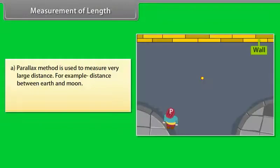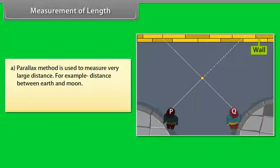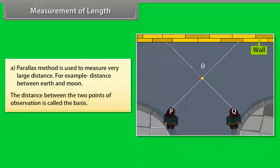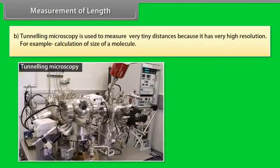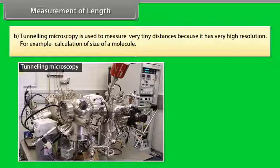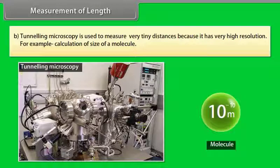Let us understand with an example. A girl is observing the rod against a wall from two different points P and Q. She notices that the position of the rod seems to change with respect to the wall. This is known as parallax. The distance between P and Q is called basis. Tunneling microscopy is used to measure very tiny distances because it has very high resolution, for example, calculation of size of a molecule.